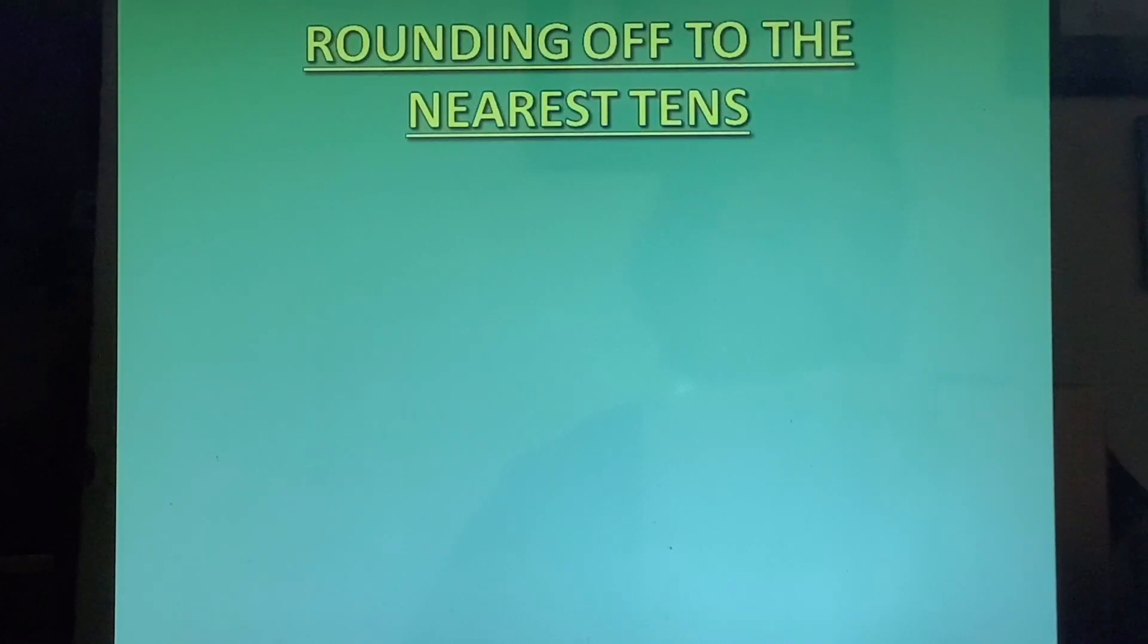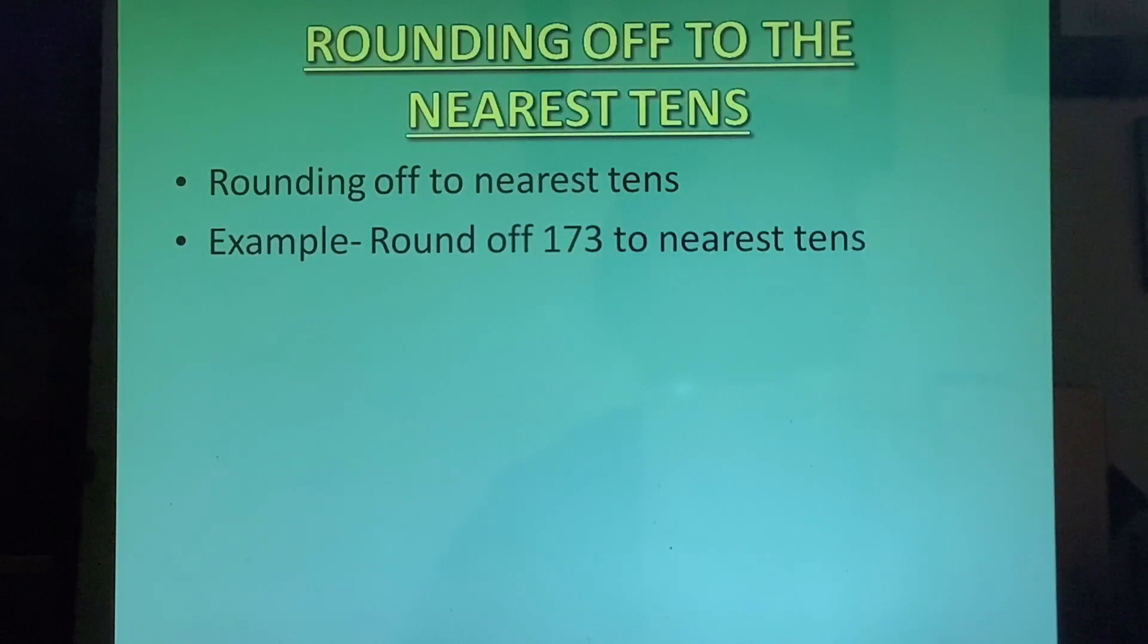Now rounding off can be done through different place values. We will start with rounding off to the nearest tens. To understand the concept I have explained with the help of number line and a seesaw model. You will not be doing like this in your classwork copy. This is for your understanding. Let us take an example.